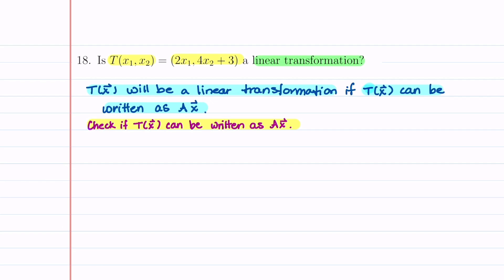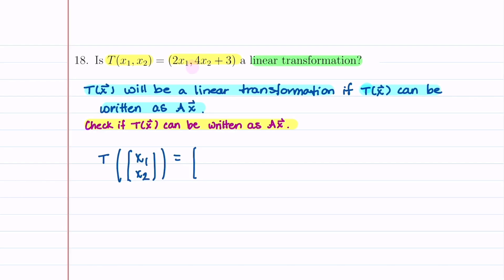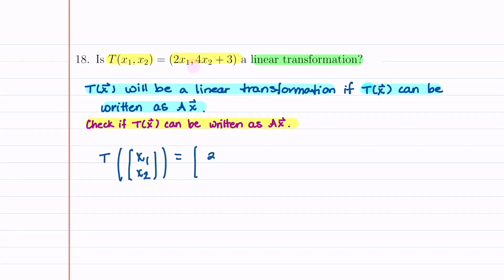It's going to be really helpful if we start by taking our transformation and writing it as a vector. So let's do that. We have T of our vector x₁, x₂ is going to be equal to the vector. Before we do this, let's notice that we have one comma. That comma tells us we're going to have two components and it separates those two components. So our first component is going to be 2x₁ and then our second component is going to be 4x₂ plus 3.